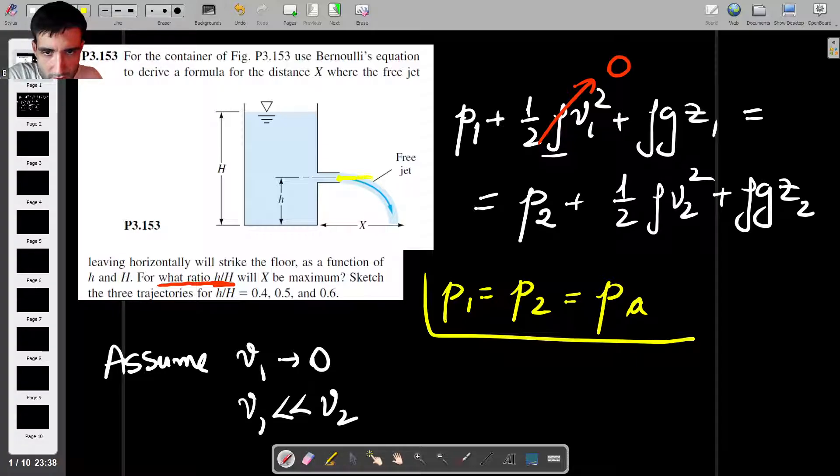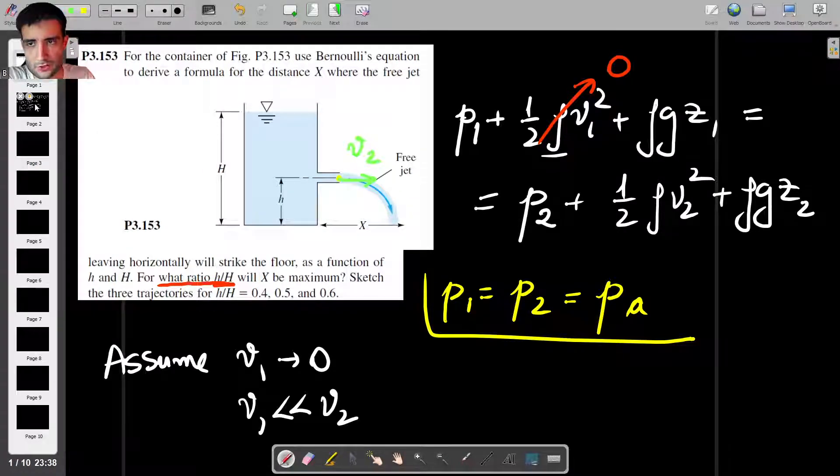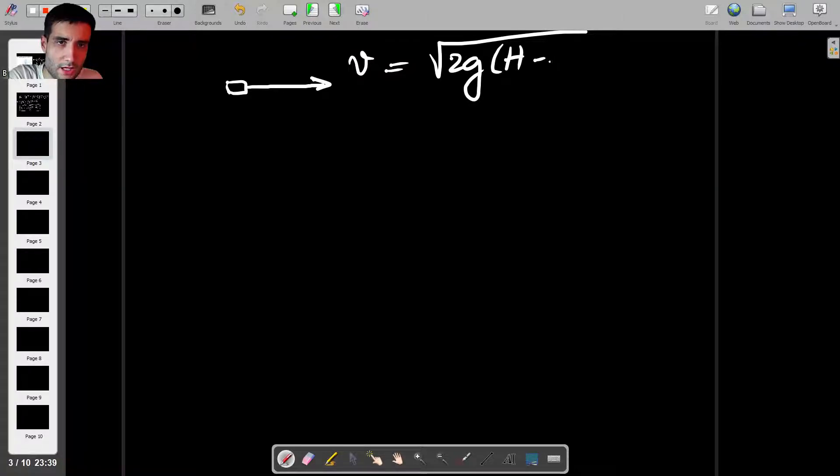This is the velocity here. Let me just clear this up a bit. This is the V2. So let's now try to calculate the distance that the water travels. From the moment the water leaves the tank, it is subjected to freefall. As it's subjected to freefall, it will move in the X direction. It's got this velocity as it comes out.